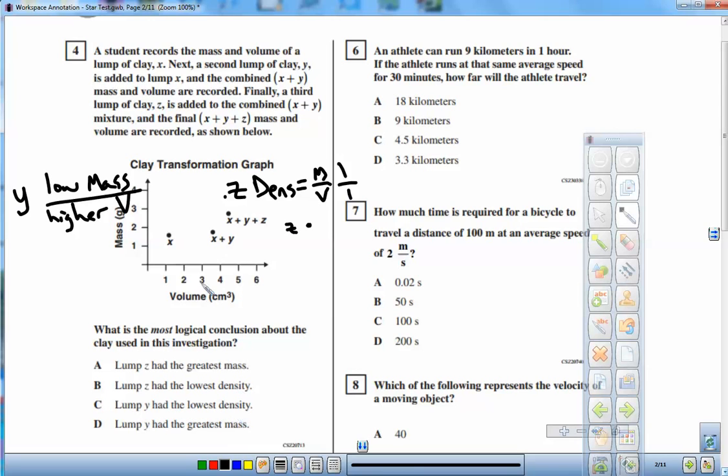Lump y had the lowest density. Well, that is the correct answer. Why is d not correct? Why had the greatest mass? Well, no, because y, adding y, adds volume, not mass. So you just have to read on the side what is that label. Well, it's adding volume.